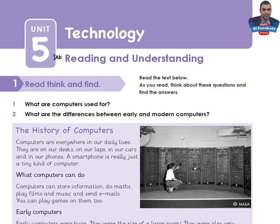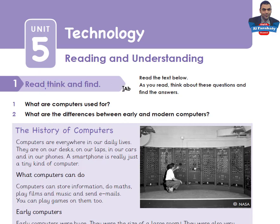Let's go to page 42 of your skills book: Unit 5, Technology, Reading and Understanding section. Activity 1 — Read, Think and Find. Read the text below. As you read, think about these questions and find the answers: one, what are computers used for? Two, what are the differences between early and modern computers?